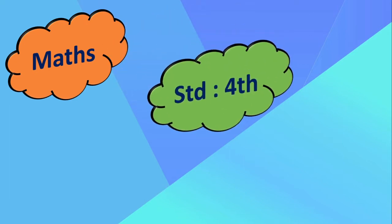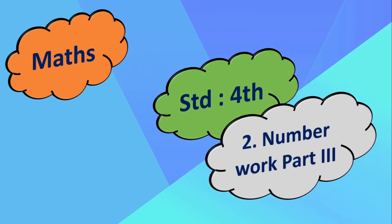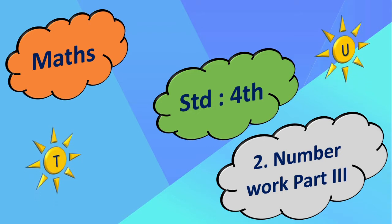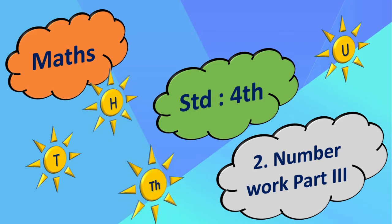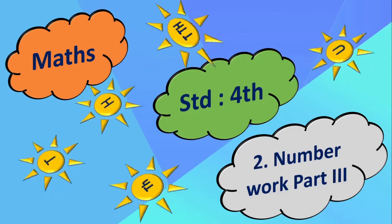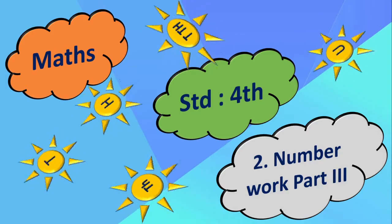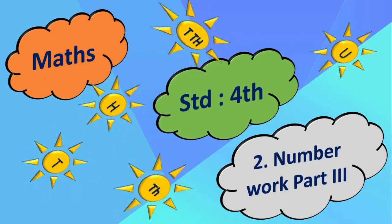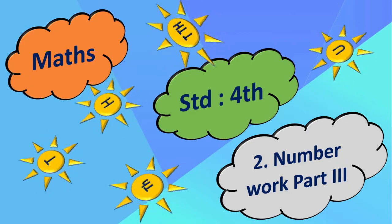Subject: Maths, Standard 4th, and the topic is Number Work Part 3. Dear children, Number Work Part 1 and Part 2 we have already completed. In those, we learnt how to read and write 3-digit, 4-digit, and 5-digit numbers. We also studied the place value of a number and the expanded form of a number. Today we will move to Number Work Part 3 and proceed to the further portion.